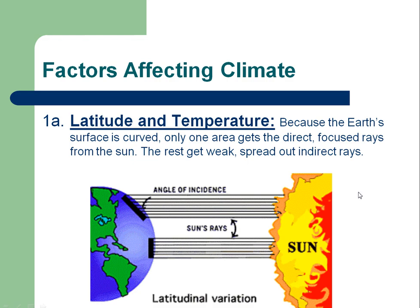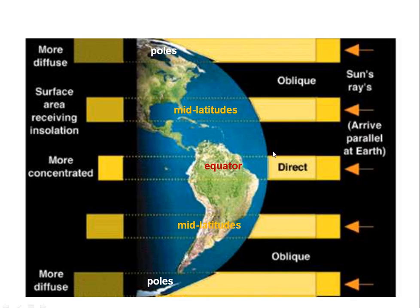The biggest impact on temperature is latitude, because the Earth's surface is curved. Here at the equator, the Earth's surface is being hit directly by the sun's rays, meaning the sun's rays come in at a 90-degree angle from the surface of the Earth. It's focused on the equator and thus is more concentrated.